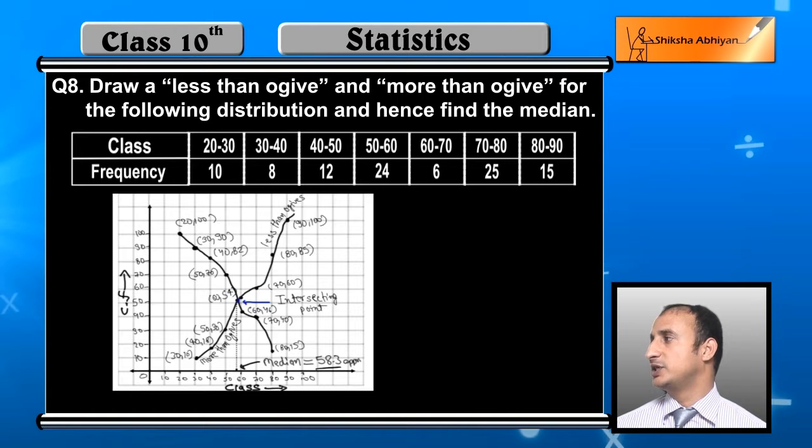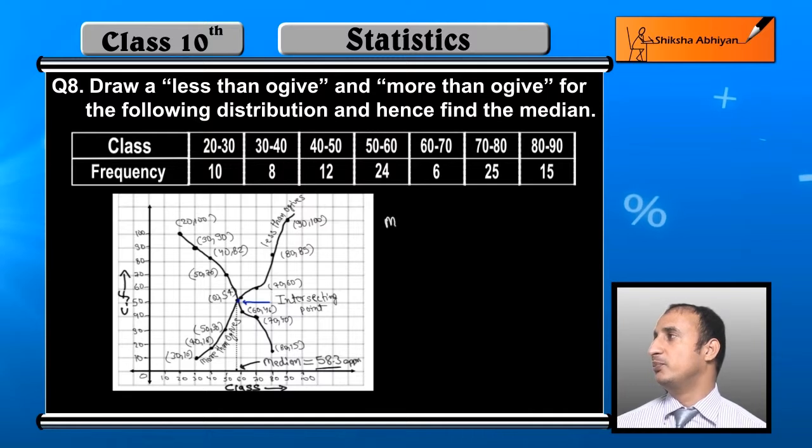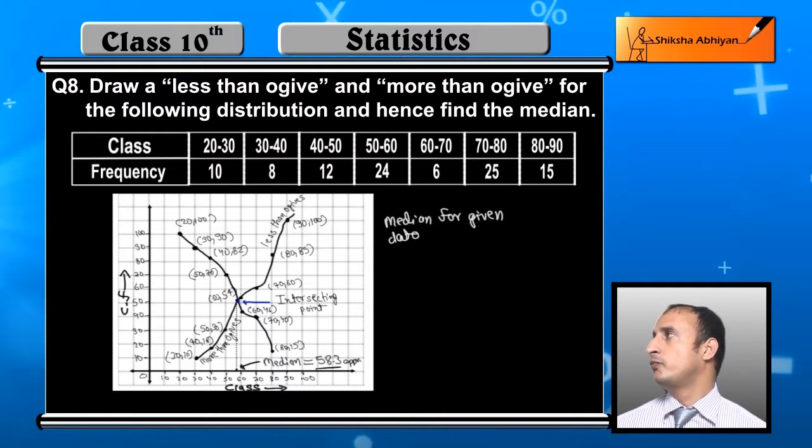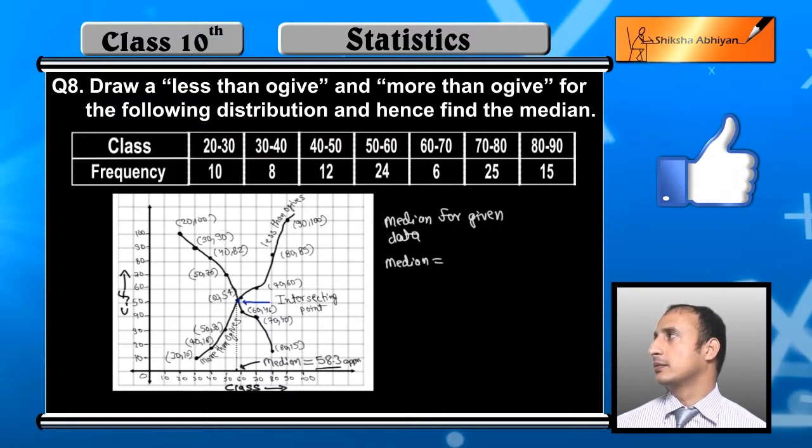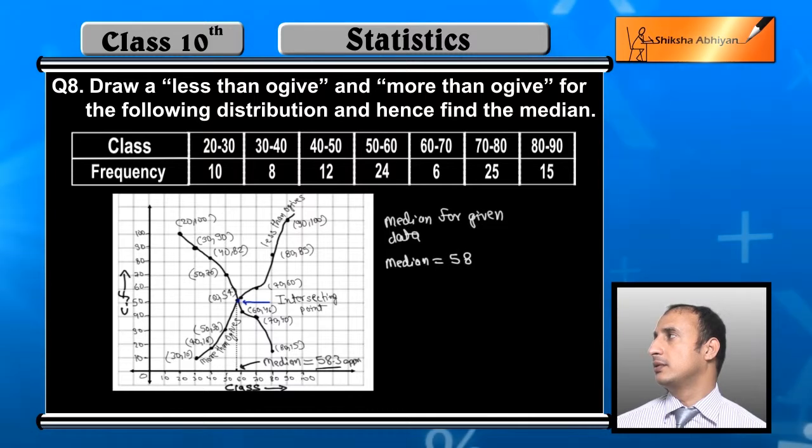From the graph you will get 58.3, which is the median of the data. So I will give you the median for the given data: median is equal to 58.3 approximately.